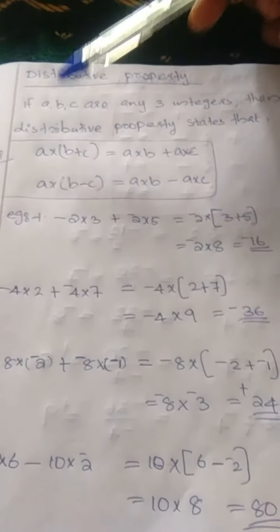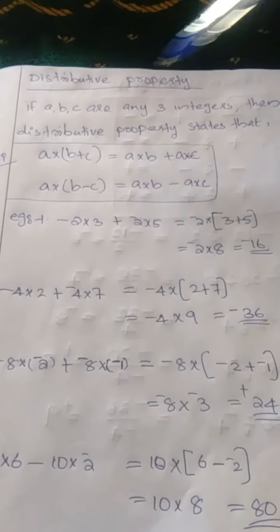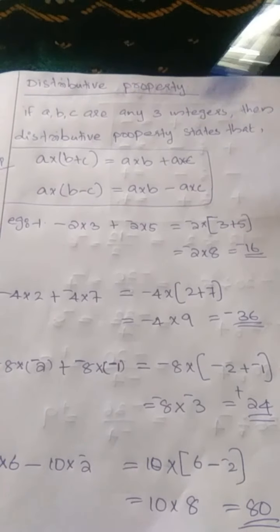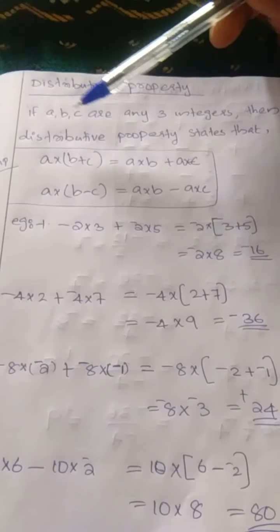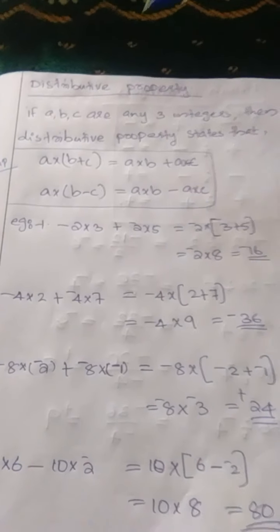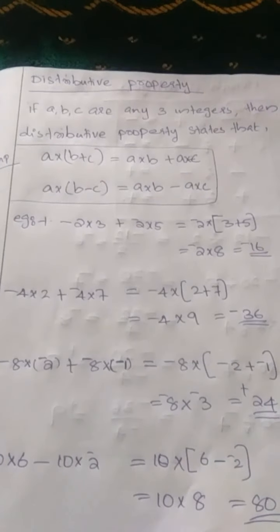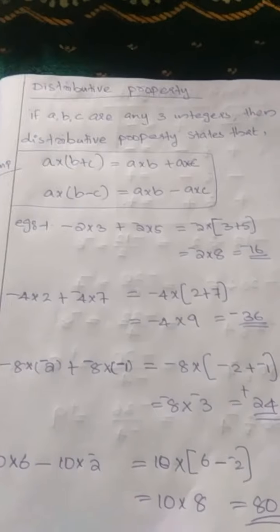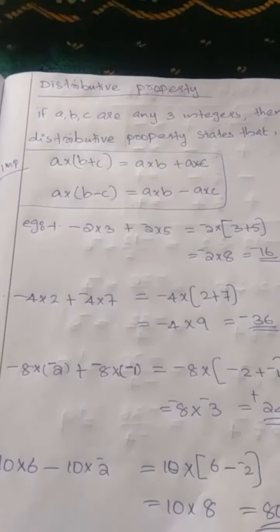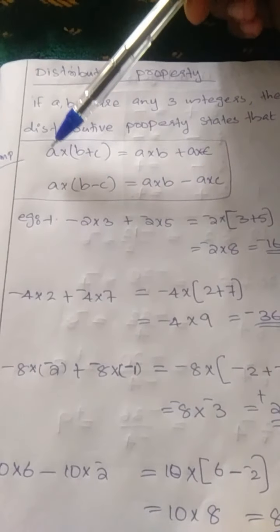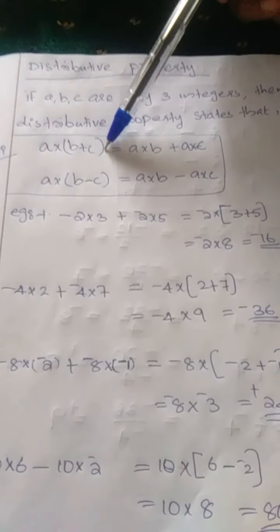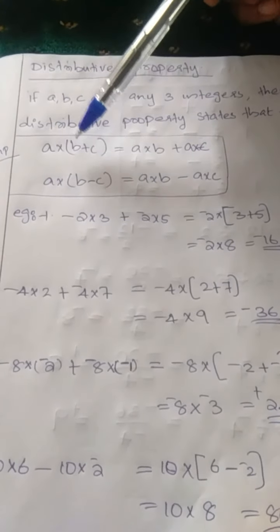If A, B, C are any three integers, then the distributive property states that — if A, B, C are any three integers, like 1, 2, 3, 4, or negative 1, negative 2, negative 3, we can take any numbers. If we multiply the first number with the sum of the other two numbers, that means A into (B plus C).